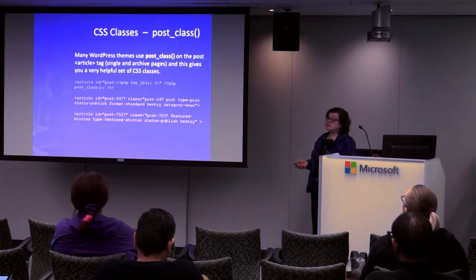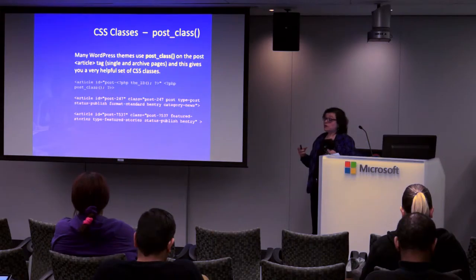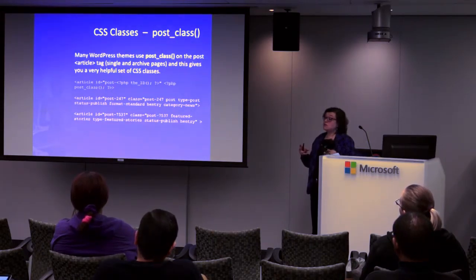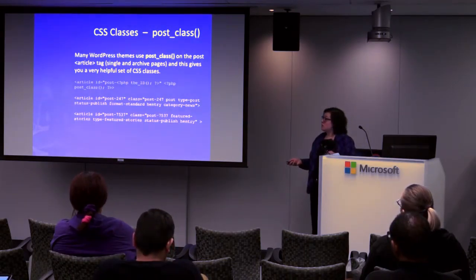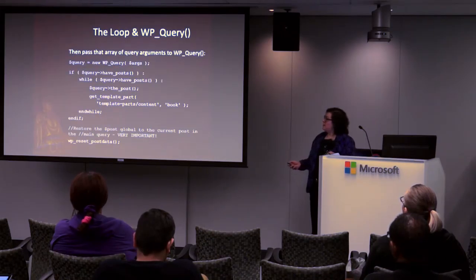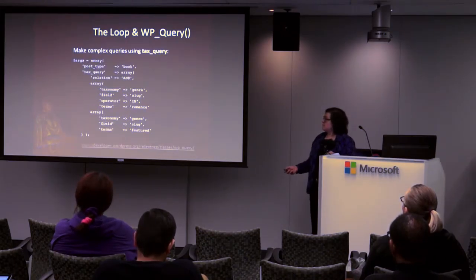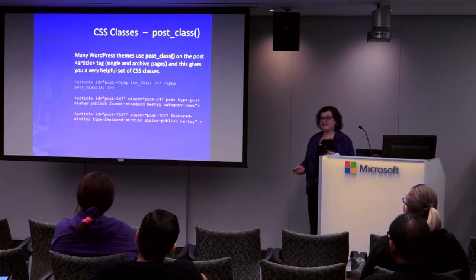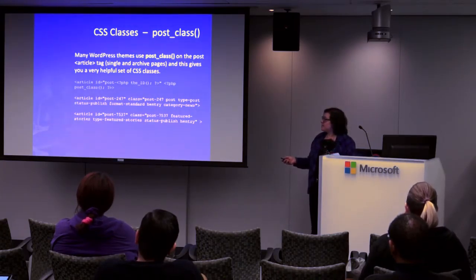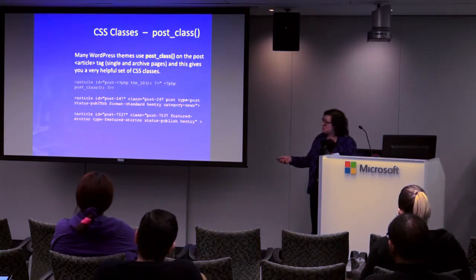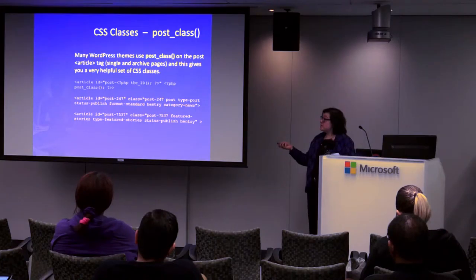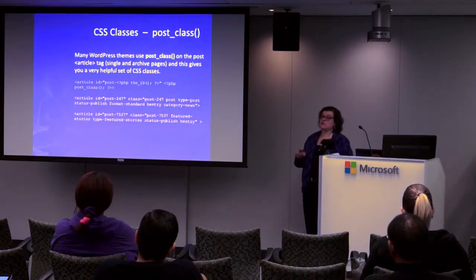post_class() is the same concept. Typically used in your loop for each piece of content — once on a single page, but once per piece of content on an archive page. It gives you classes about the type: post, type-post, status, and if you're using post formats, format is in there along with category. This can be really helpful, especially in search results, if you want to display content differently based on what kind of content it is.